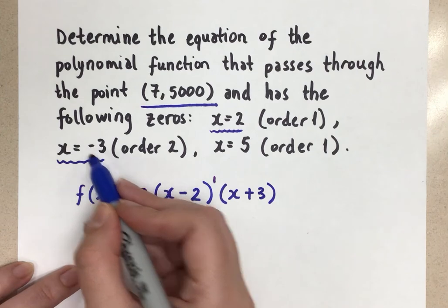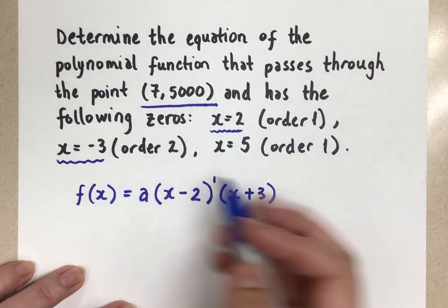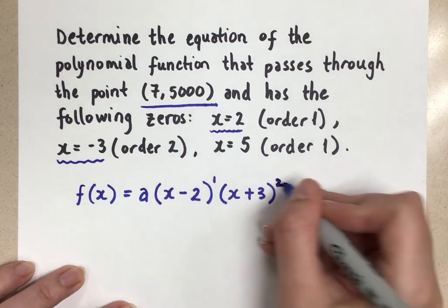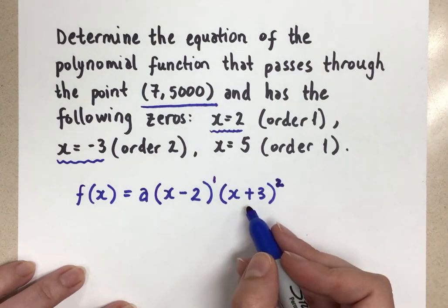negative 3 plus 3 gives you 0. That's what makes it a zero. The order is 2. So that means I need an exponent of 2 on that factor. That's what gives us the bounce happening at that particular zero.